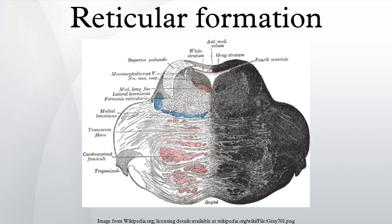The reticular formation has been functionally cleaved both sagittally and coronally. Traditionally the nuclei are divided into three columns: the median column, also known as the raphe nuclei; the medial column, also known as the magnocellular nuclei, because of the larger size of the cells; and the lateral column, also known as the parvocellular nuclei, because of the smaller size of the cells.